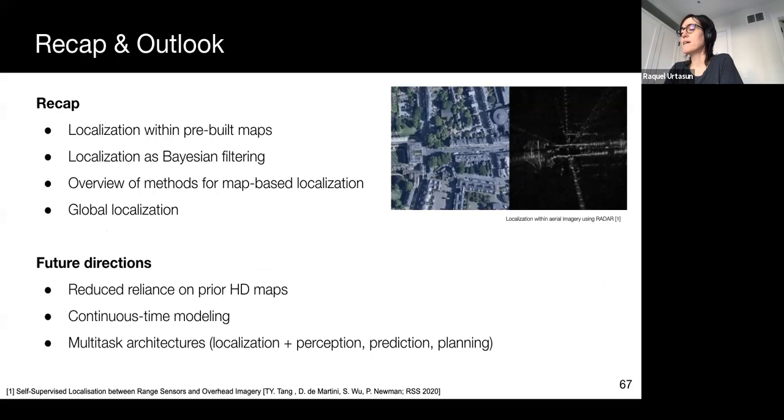Important future directions include reducing our reliance on high-definition maps, as these remain expensive to build and hard to get right. Finally, Bayesian filtering typically discretizes time. However, in real life sensor inputs come continuously, and they are typically at different frame rates for each one of these sensors. So, designing methods that explore this fact remains challenging and very interesting.